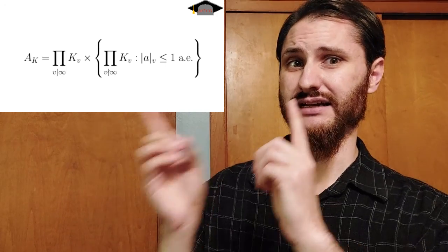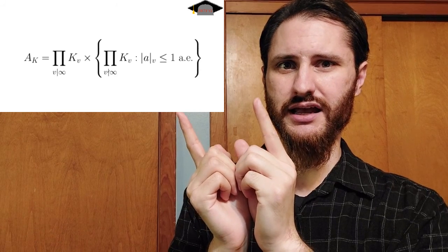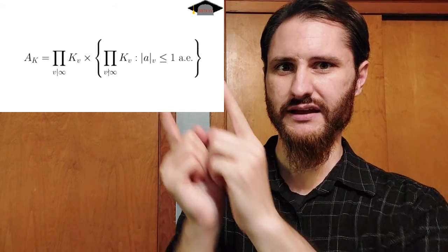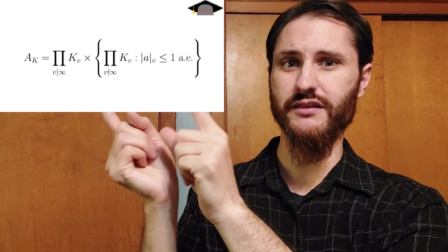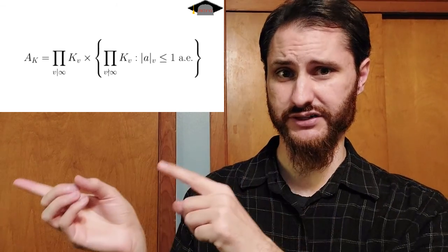For a number field, we have to do something slightly different, because number fields have Archimedean places whereas function fields do not. In an Archimedean local field, the unit ball is not a subring — the unit ball in R is not a subring of R. So for a number field, the Adele ring looks something like this: for all of the Archimedean places, we don't bother thinking about a subring — we just take the full local field. And for all of the non-Archimedean places, we still have the restricted product that we saw for function fields.